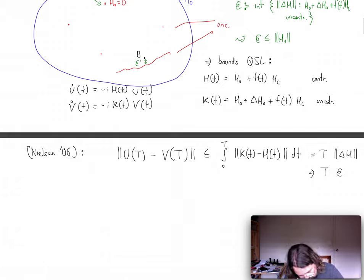On the other hand, on the left side, because the system that corresponds to you is controllable at time capital T, by assumption, we can make this unitary arbitrary.